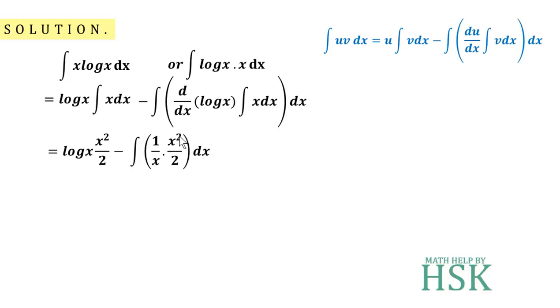This x and this power cancel out, and I can write this as 1 by 2 x squared log x minus integration of 1 by 2 x with respect to x.